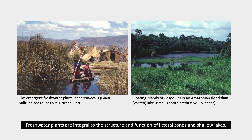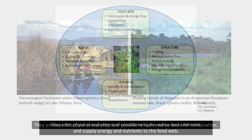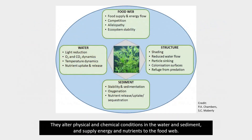Freshwater plants are integral to the structure and function of littoral zones and shallow lakes. They produce structural complexity and provide refuges and surfaces for colonization. They alter physical and chemical conditions in the water and sediment, and supply energy and nutrients to the food web.